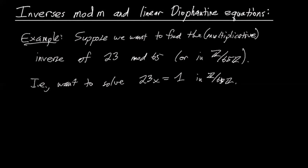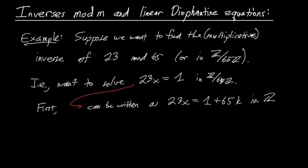So the first thing, notice this can be rewritten as 23x equals one in Z mod 65 can be written as 23x equals one plus 65K in Z. So we've moved rings, we've moved from Z mod 65Z to the integers Z.